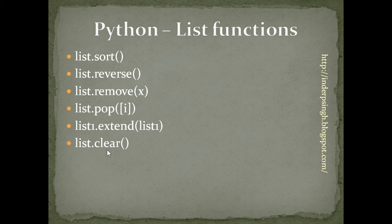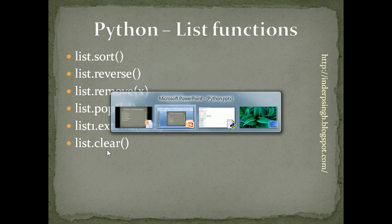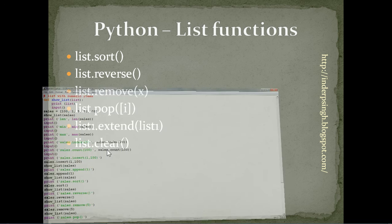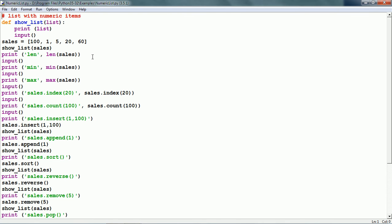I already have created a script which will show a numeric list and we will see all these functions. We have a list of sales — let us say sales for customers — and there are 5 items in this list: 100, 1, 5, 20 and 60.